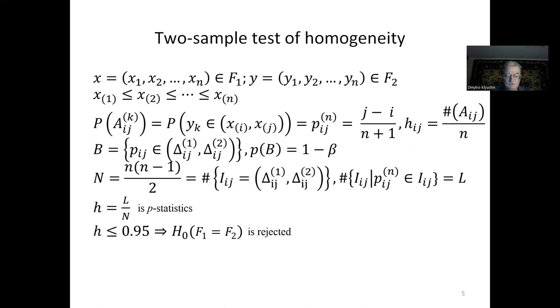To do this, we use the confidence intervals for binomial proportion with given significance level. Let n be the number of confidence intervals containing the expected probability. The proportion h of the confidence intervals containing the expected probability is called p-statistics. It is an estimation of the probability that the samples x and y are drawn from the same distribution.